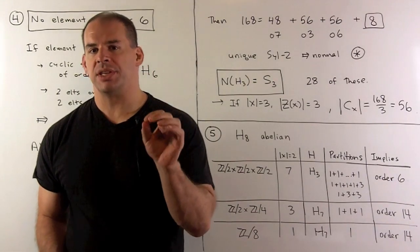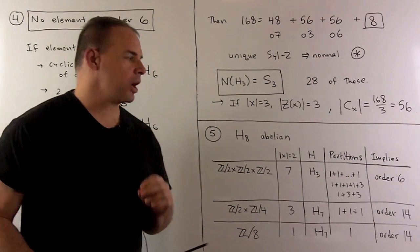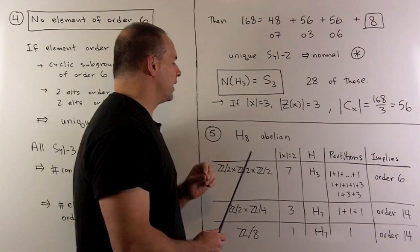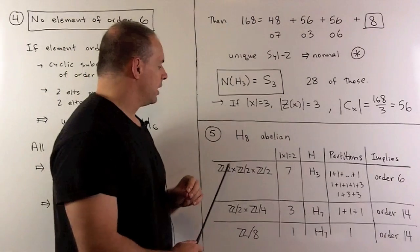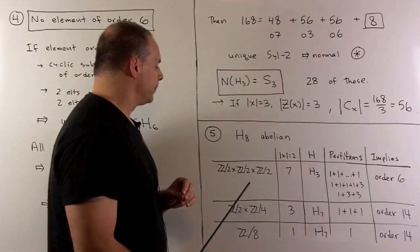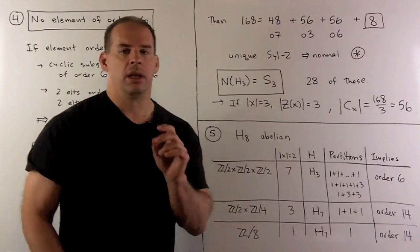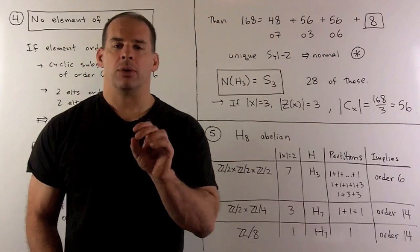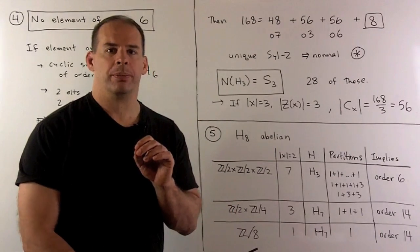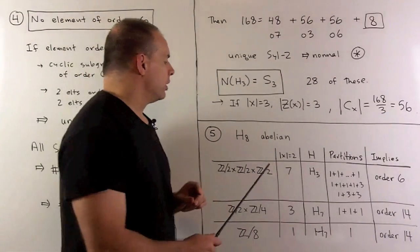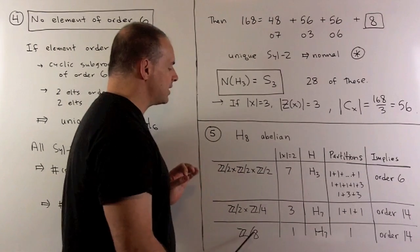Part five: let's consider our Sylow 2-subgroups. We'll choose one, we'll call it H sub eight, and we're going to assume first that H sub eight is abelian. That means we have three possibilities: Z2 cross Z2 cross Z2, Z2 cross Z4, or Z mod eight. We're going to let each act on its elements of order two. In the first case, we have seven elements of order two; second case, we have three; last case, we have one.